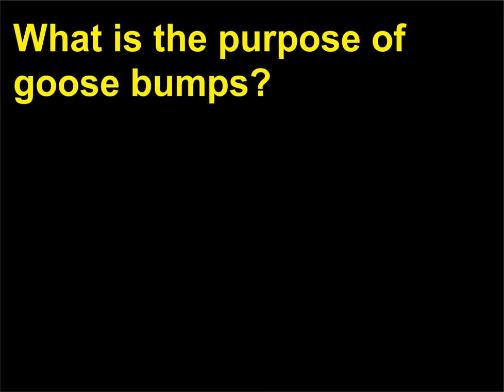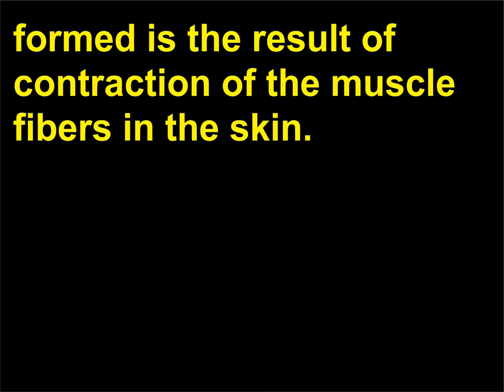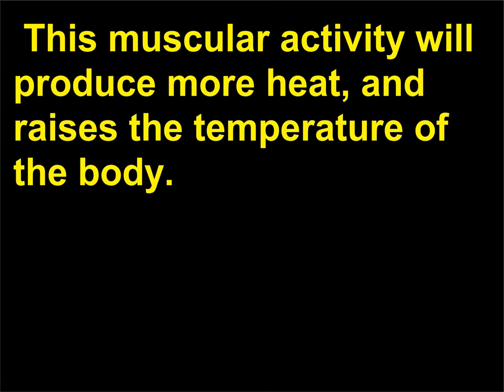What is the purpose of goose bumps? The puckering of the skin that takes place when goose flesh is formed is the result of contraction of the muscle fibers in the skin. This muscular activity will produce more heat and raises the temperature of the body.